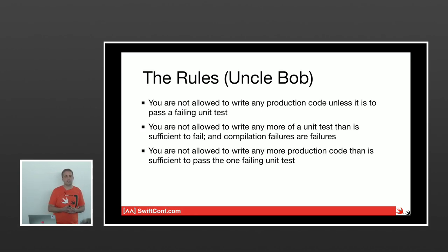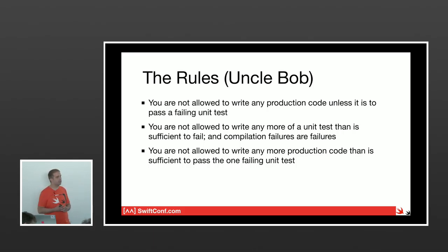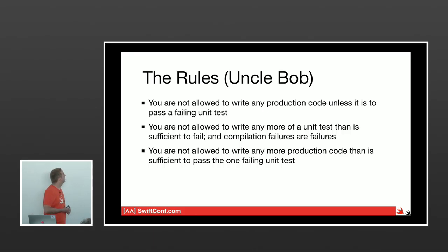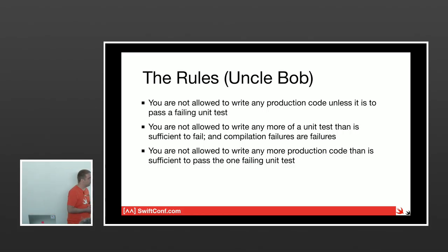You need essentially only three rules to start writing tests — in this case, test-driven development. The three rules are from Uncle Bob, Robert C. Martin. The first: you are not allowed to write any production code unless it is to pass a failing test. The second: you are not allowed to write any more of a unit test than is sufficient to fail — if your test doesn't compile, it is a failing test. The third: you are not allowed to write any more production code than is sufficient to pass the one failing unit test.